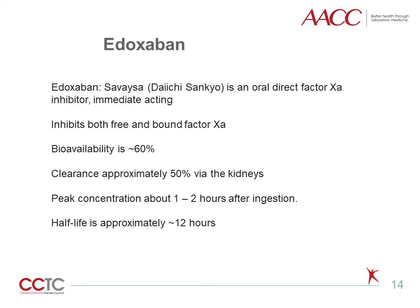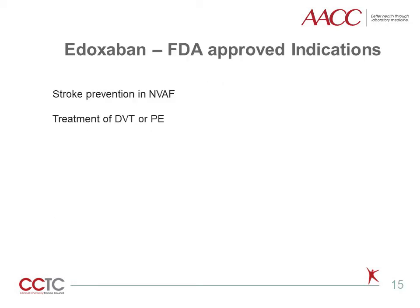Edoxaban, brand name Savaysa, is an oral direct Xa inhibitor, immediate acting with peak concentrations about one to two hours after ingestion. Edoxaban inhibits both free and bound activated factor X and about 50% is excreted through the kidneys. Drug half-life is approximately 12 hours. The FDA-approved indications for edoxaban are stroke prevention in non-valvular atrial fibrillation and treatment of DVT and PE.